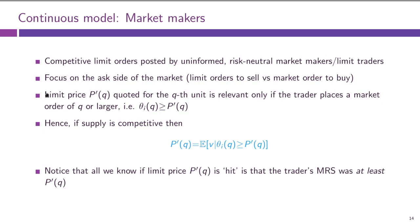The difference between the dealer and the limit trader is that the dealer could observe the whole trade size queue and offer a price conditional on that whole trade size. For a limit trader, things are different.